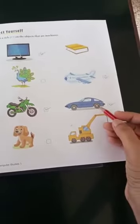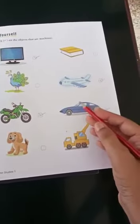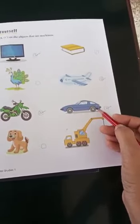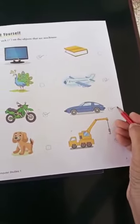Next one, this is a blue car. This is also a machine. So put a tick mark here.